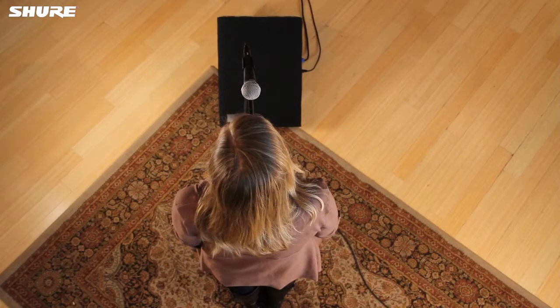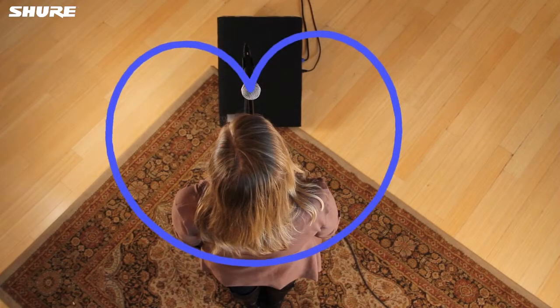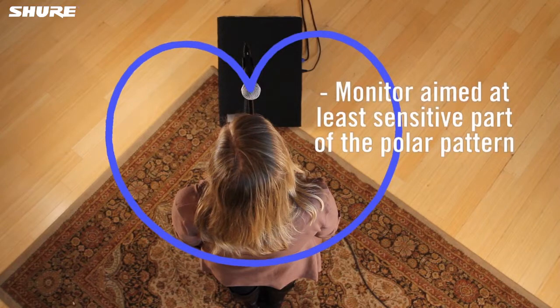The microphone's polar pattern affects where floor monitors should be placed to minimize feedback. With a cardioid mic like the SM58, the floor monitor should be placed directly in front of the mic stand. This way, it is aimed at the least sensitive part of the microphone's polar pattern.